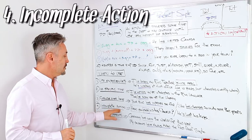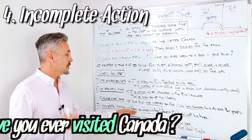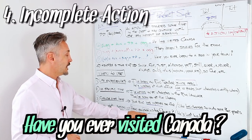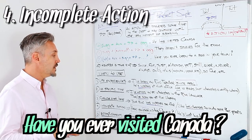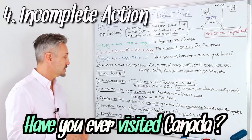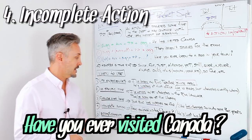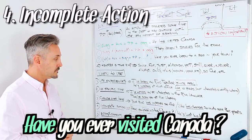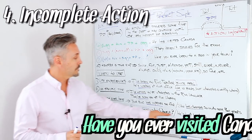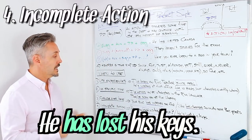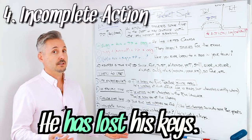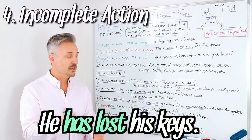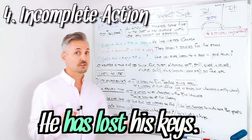The fourth one is for incomplete actions. For example, have you ever visited Canada? We normally use the adverb ever when you want to ask if somebody did something or not. Have you ever visited Canada? What is important here? If you visited or not. So you're interested in the action. Another example: He's lost his keys, he has lost his keys, I can't find them. So that means that he's lost his keys sometime in the past. I'm not interested, but I'm interested that he has lost his keys.